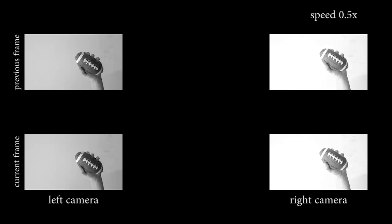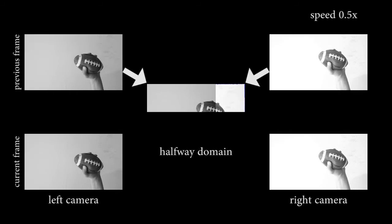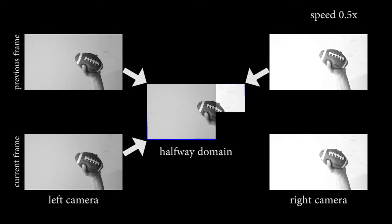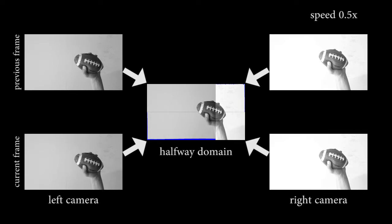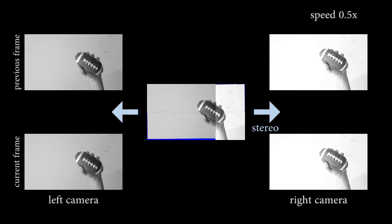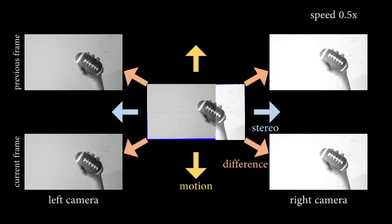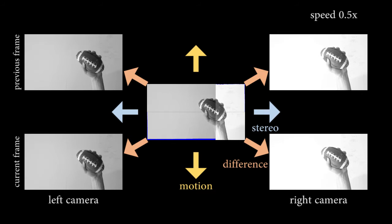Input to our approach is a binocular video stream captured by a stereo camera rig. We represent the scene motion relative to a novel halfway domain, which is conceptually in between the captured data in space and time. 3D motion is parameterized with respect to this domain in terms of three flow fields: the stereo, motion, and difference flows. Our approach jointly optimizes over two subsequent time steps of the captured video streams to reconstruct the 3D scene motion.